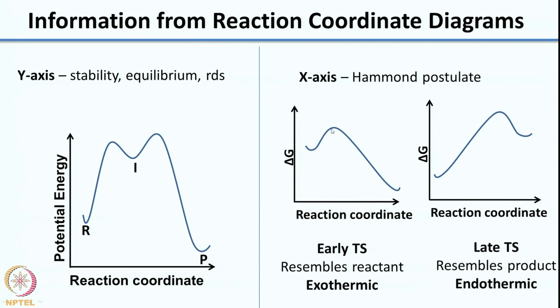The x-axis and the position of the transition state give information about the structure of the transition state via the Hammond postulate. If the transition state is close to the reactant, it resembles the reactant — an early transition state. If close to the product, it resembles the product — a late transition state. Highly exothermic reactions show an early transition state; endothermic reactions show a late transition state. We looked at examples using this to explain selectivity.